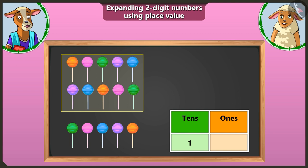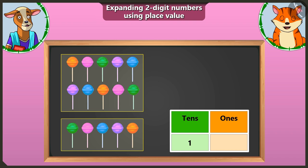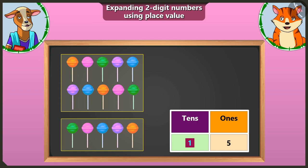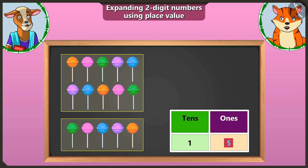Now tell me, Billy, besides the group of ten, how many lollipops are left with which a group of ten cannot be made? There are one, two, three, four and five lollipops left. We will write the remaining five lollipops in the box of ones. One ten and five ones make the number fifteen. Well done, Billy!